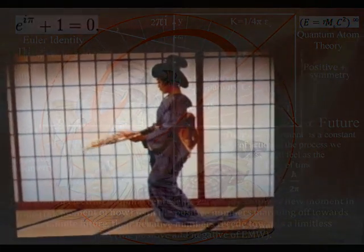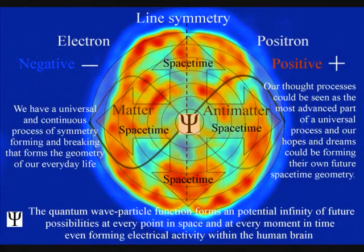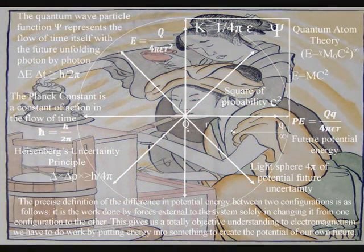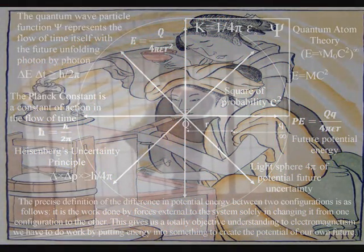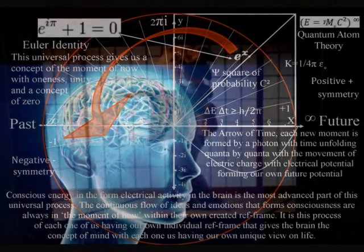Because the photon is also the carrier of the electromagnetic force, in this theory electrical activity in the brain is the most advanced part of this universal process. This gives us an objective understanding to electromagnetism. We have to do work by putting energy into something to create the electrical potential, and by doing so we create our own future within that reference frame. Therefore the electrical potential of consciousness is always in the moment of now within its own reference frame, looking out at creation, comprehending this process as the flow of time with a past and potential future.